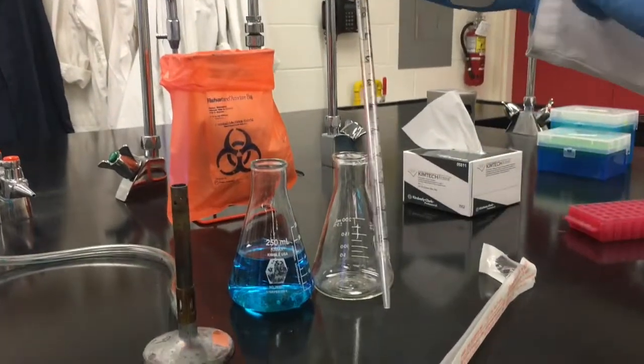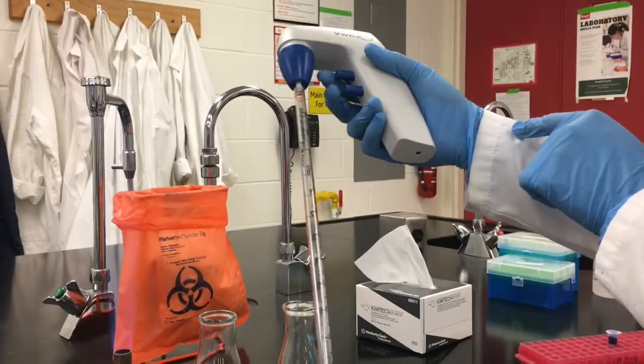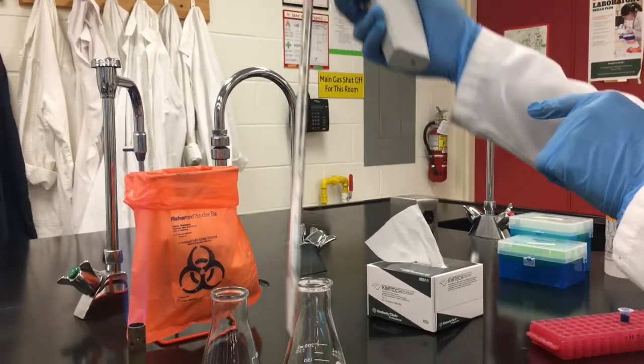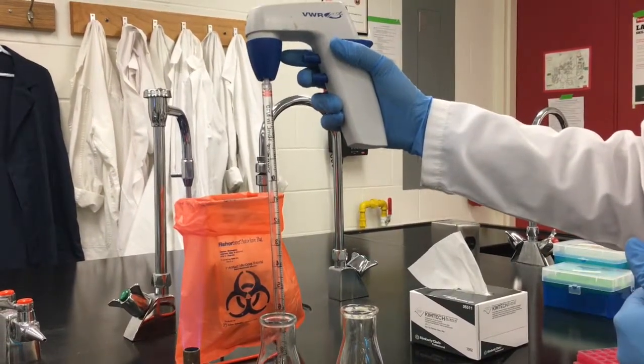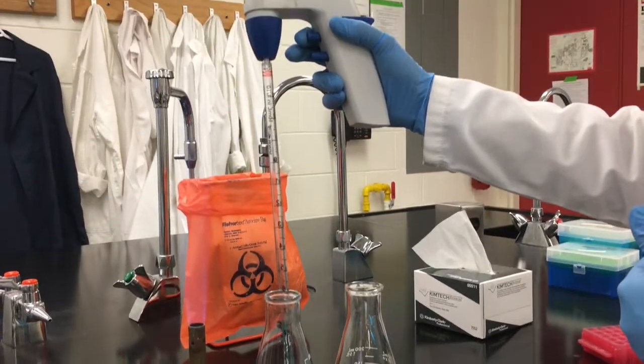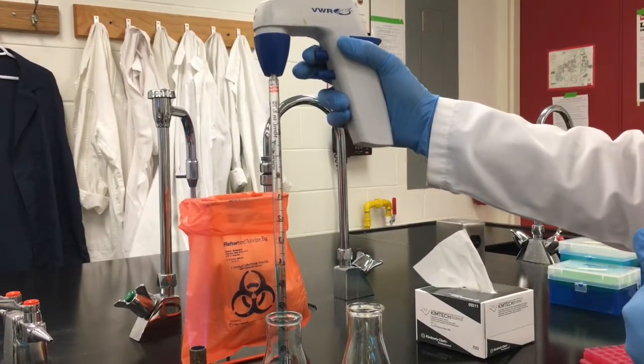Electronic pipetter has two buttons, one for drawing up the liquid and one for expelling the liquid. Always maintain the pipette in a vertical position to prevent any liquid from entering the pipetter. Insert the tip into your solution and press the top button to draw it up into the pipette.